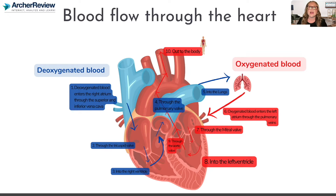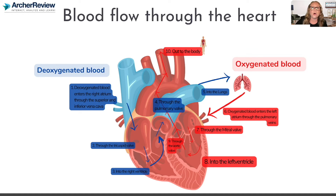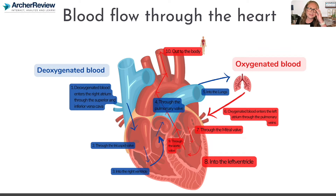When the left ventricle squeezes, it has to go out that exit door — the aortic valve — into the aorta, our biggest artery. That artery goes away and out to the body. This is the end of that red subway line; we're bringing that oxygenated blood all the way out to the body.